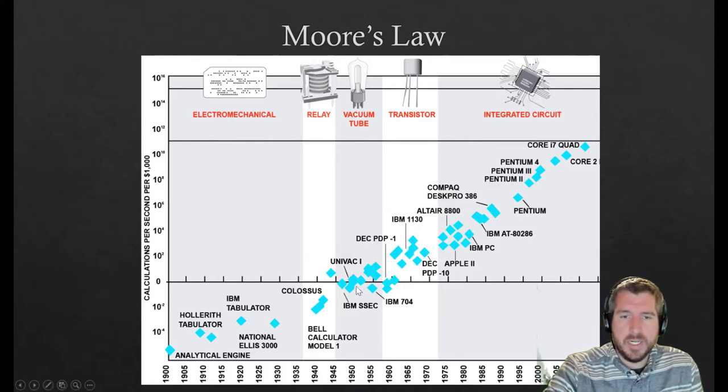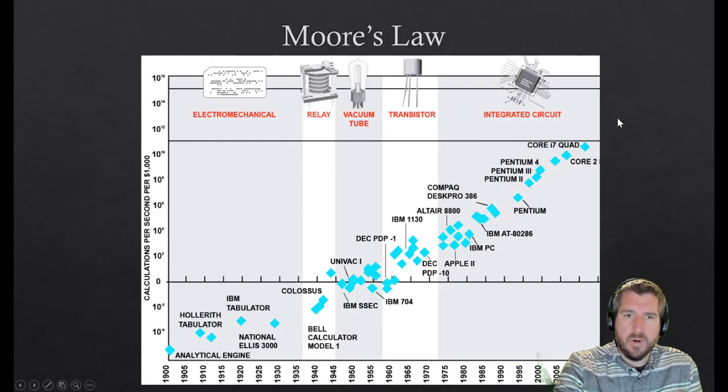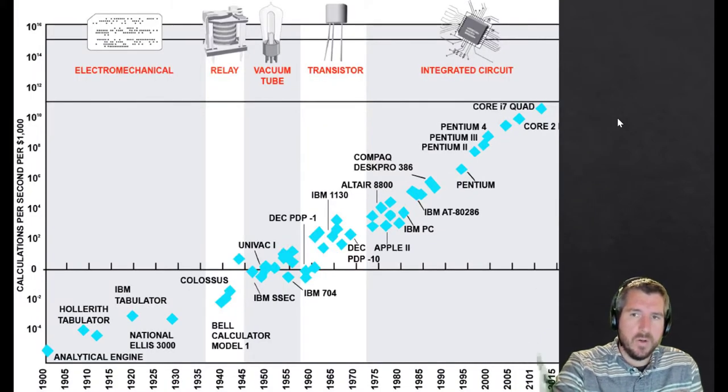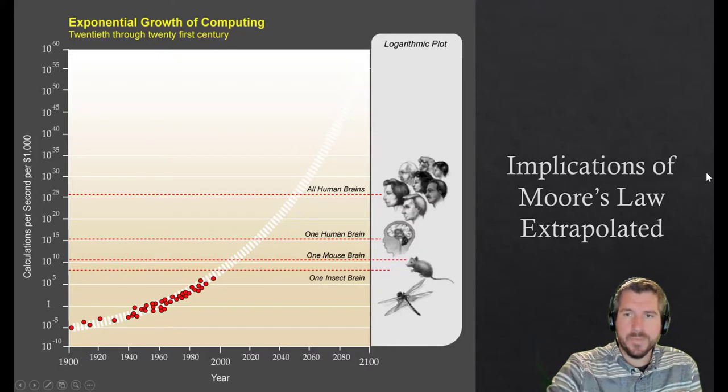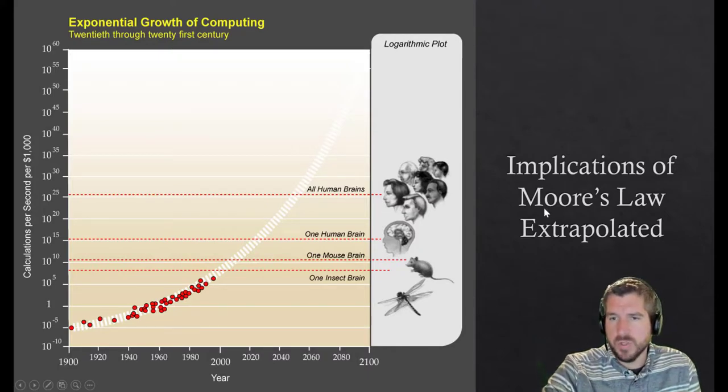The idea is that people have predicted for a long time that this is just going to keep going up and up and up into the future. Let's think about how that might work. This is sort of just the same chart, just a little bit extrapolated. Let's think about the implications of Moore's Law now.